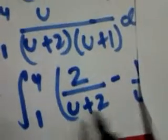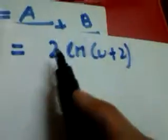The integration of 2/(u+2) is 2 ln(u+2). Remember that integration is another way of asking: differentiation of what will give that? If we differentiate 2 ln(u+2), we get 2/(u+2). Therefore the integration of 2/(u+2) is 2 ln(u+2). And the integration of 1/(u+1) is simply ln(u+1).